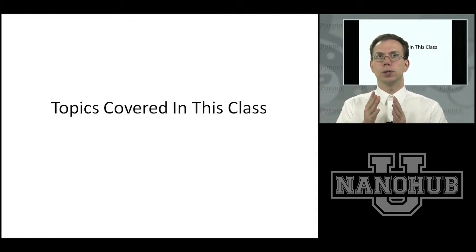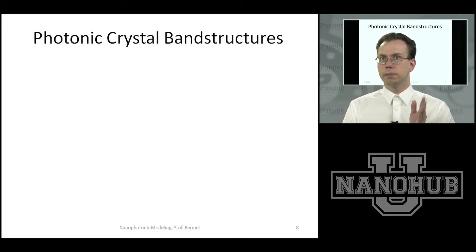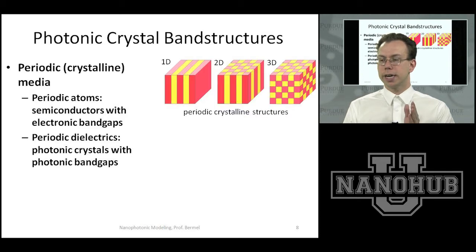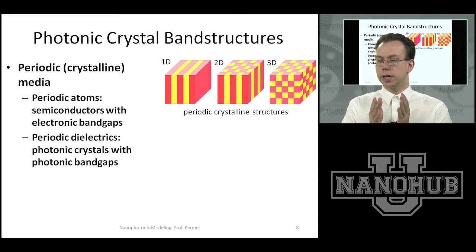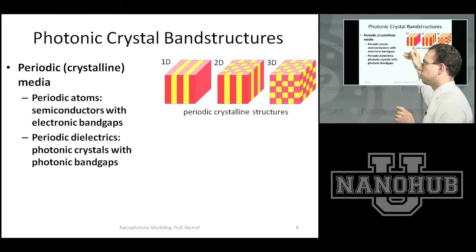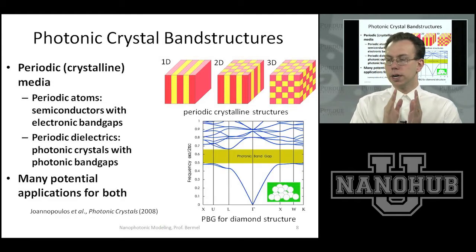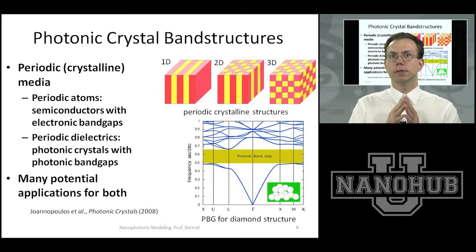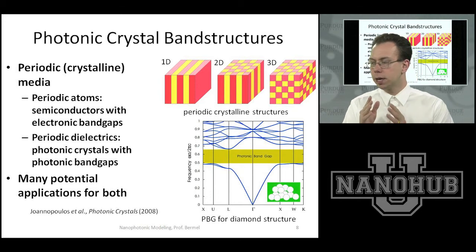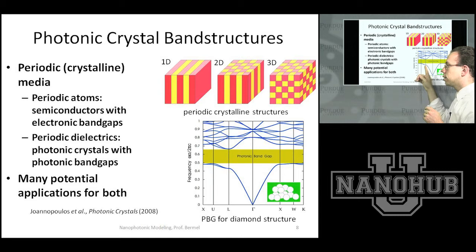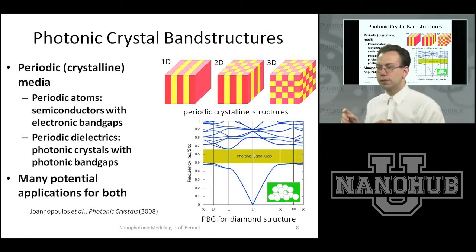Now let me explain the key tools you're going to need to study systems like that. The first and most fundamental idea is photonic crystal band structures and band gaps. A photonic crystal is effectively a semiconductor for photons — you have periodic dielectric structures in 1D, 2D, and 3D. One of the most important features is the photonic band gap: looking at the band structure, there's a range of energies not allowed to propagate through the photonic crystal structure, referred to as the photonic band gap.